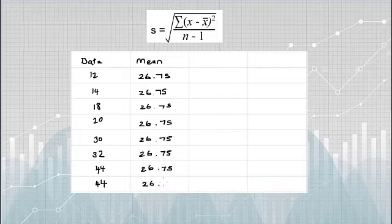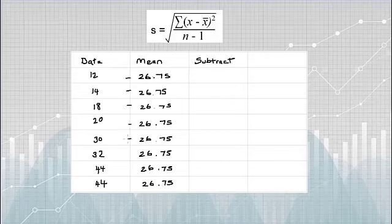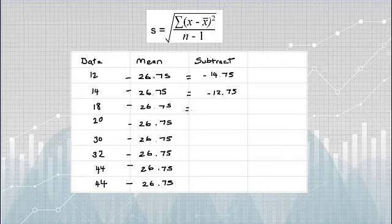The next step is to subtract the mean from the data point. So 12 minus 26.75 is minus 14.75. And I'm just going to continue down that column, subtracting my mean from my data point.